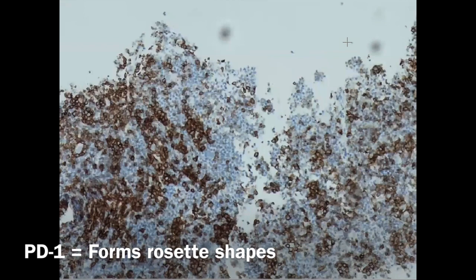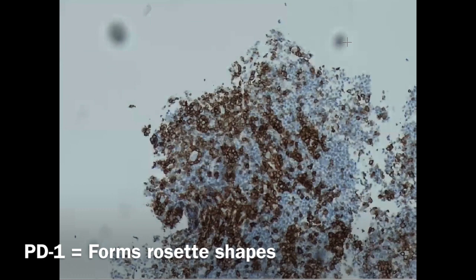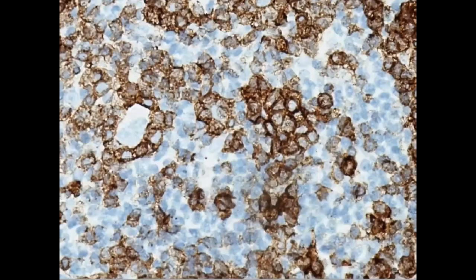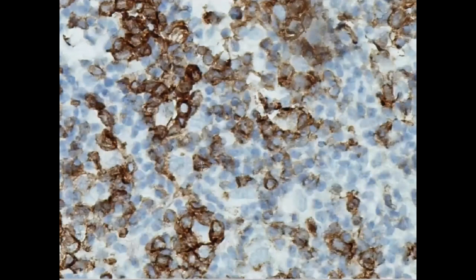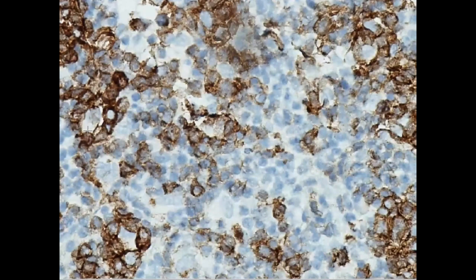Now let's see an important feature: with either PD1 or CD57, we can see how the T cells stain and surround these big cells forming rosettes. This is another feature that helps diagnose this entity. From low power, can you see this rosette? These are T cells stained by PD1 surrounding this large LP cell. At higher power, we see this beautiful rosette with T cells surrounding the LP cell. We have many rosettes here — another rosette with T cells surrounding LP cells.